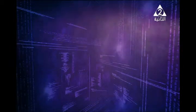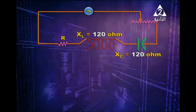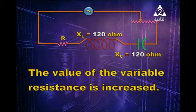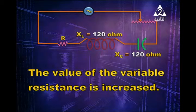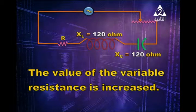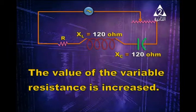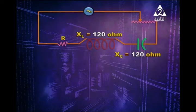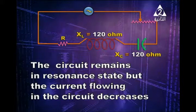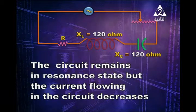When the value of the variable resistance is increased, this will not alter the state of resonance either. Increasing the variable resistance will decrease the current. So the circuit remains in a resonance state, but the current flowing in the circuit decreases.